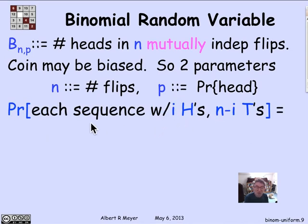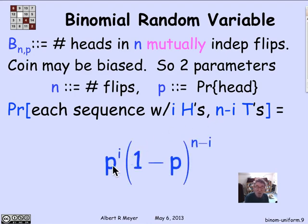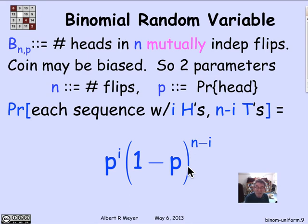Abstracting: the probability of a sequence of N tosses in which there are I heads and N minus I tails is simply P^I × (1−P)^(N−I). Given any particular sequence of H's and T's of length N, this is the probability assigned to that sequence. All sequences with the same number of H's have the same probability, but sequences with different numbers of H's have different probabilities.